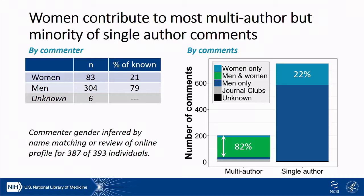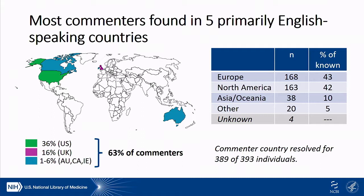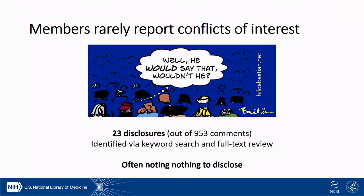We looked at demographics for those individual members and additional co-authors. We don't collect demographic information when people sign up, so this was done through a mix of name matching for gender and searching to resolve ambiguous cases, as well as searching for commenter country. We found that 21% of commenters were women. Interestingly, for individual comments, 22% were contributed by women, but women were named in 82% of the multi-author comments. Commenters were predominantly from five primarily English-speaking countries — more than 60% from those five countries. The largest proportion comes from the US at 36%, then the UK at 16%. Together, Europe and North America accounted for 85% of the commenting population.